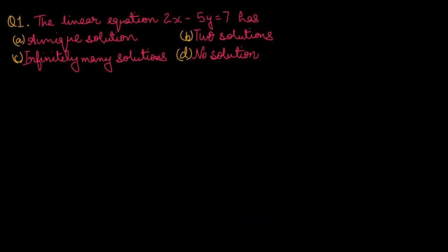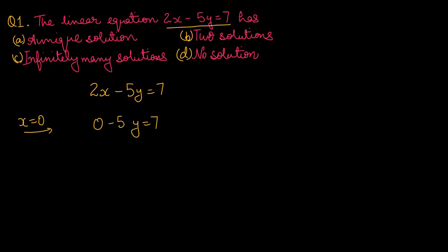Question number 1: the linear equation 2x minus 5y equals to 7 has a unique solution, 2 solutions, infinitely many solutions, or no solution? हमारे पास linear equation दे रखी है, 2x minus 5y equals to 7. अगर हम इसमें x को 0 fit out करते हैं, तो हमारे पास 0 minus 5y equals to 7 बन जाएगा और y की value minus 7 upon 5 आजाएगी।